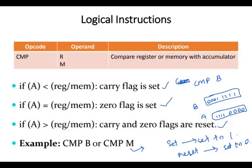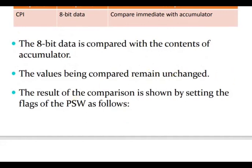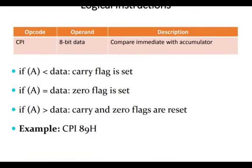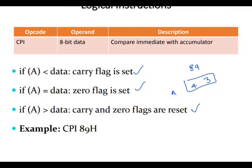CPI is Compare Immediate — it compares an immediate 8-bit data value with the contents of the accumulator. The values being compared remain unchanged. The result is shown by setting the flags of the PSW. For example, if immediate data is 89 and the accumulator has 43: 43 is less than 89, so the carry flag is set. If equal, the zero flag is set. If greater than, both carry and zero flags are reset.